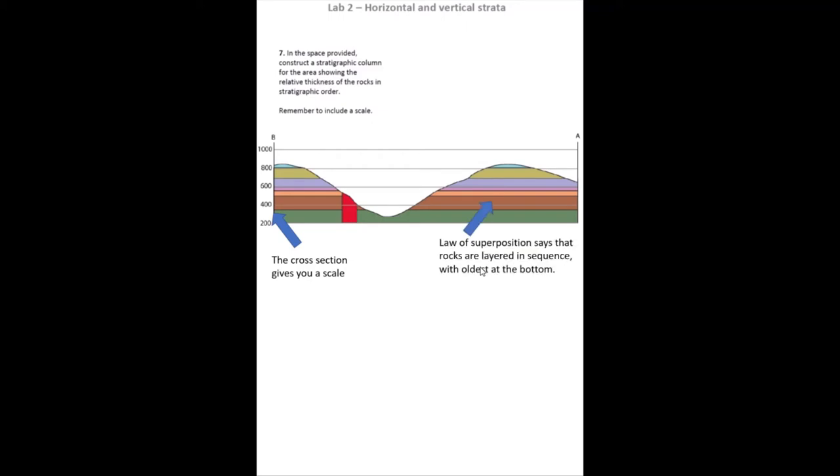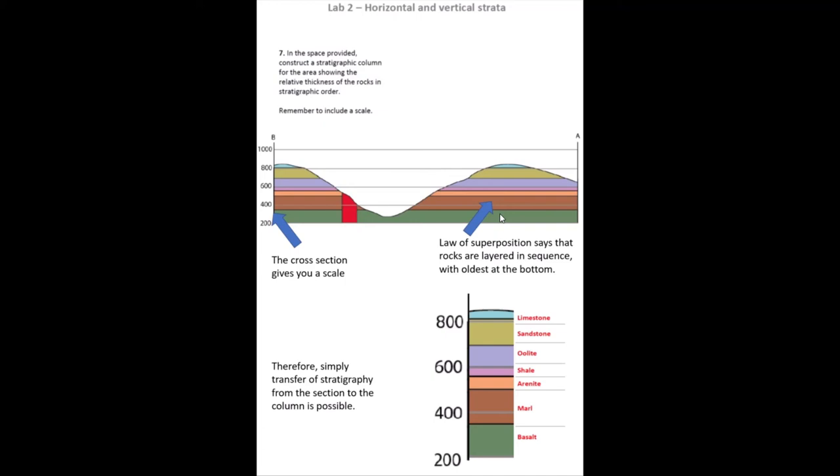And hopefully you guys remember something called the law of superposition, which says that rocks are layered in a sequence or they're deposited in a sequence with the oldest in that sequence deposited first and at the bottom of the sequence. So in order to build ourselves a stratigraphic column for this area, we can simply represent the stratigraphy that we've drawn in our cross-section as a column showing the order of deposition of our rocks and the relative and absolute thicknesses of them.